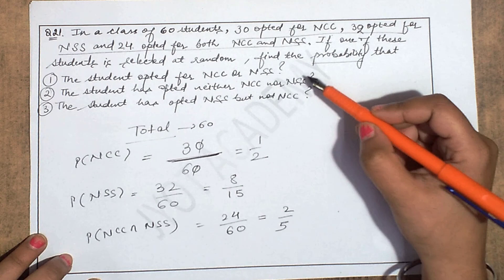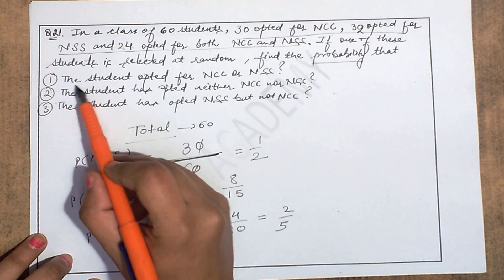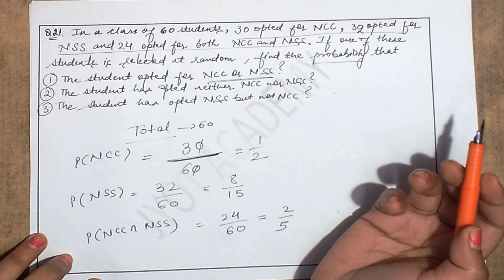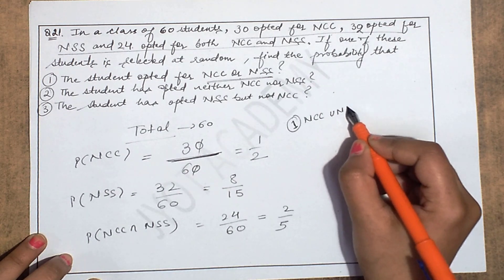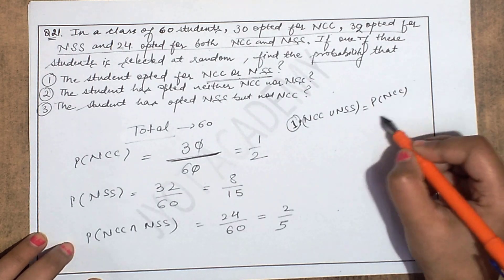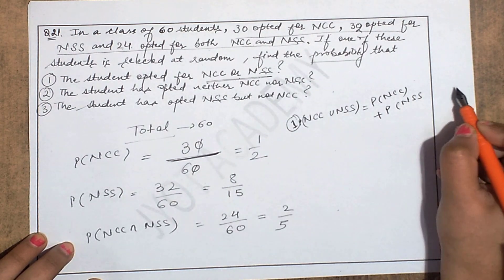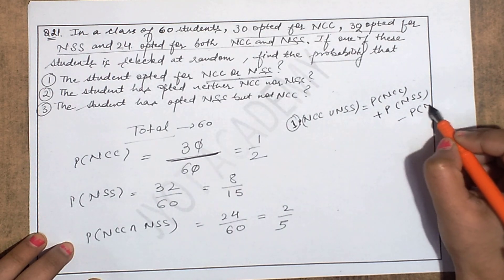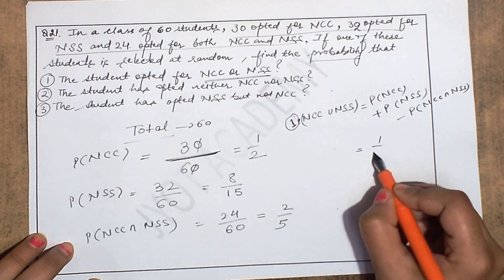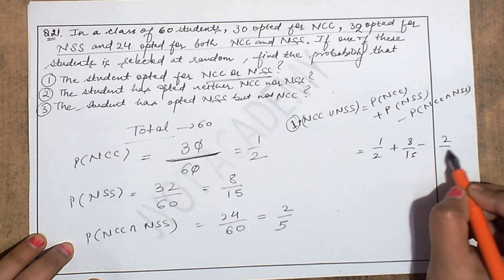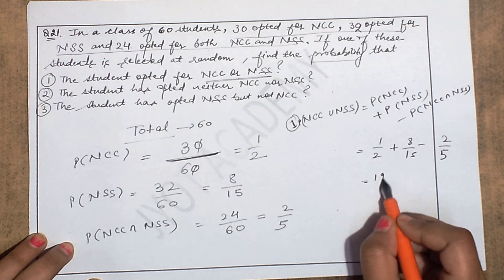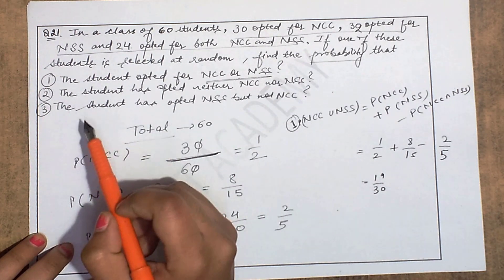First part: find the probability that the student opted for NCC or NSS, i.e., P(NCC ∪ NSS). Apply the formula: P(NCC) + P(NSS) − P(NCC ∩ NSS) = 1/2 + 8/15 − 2/5 = 19/30. That is the answer for the first part.